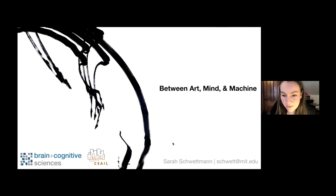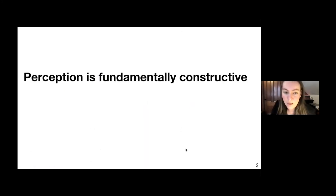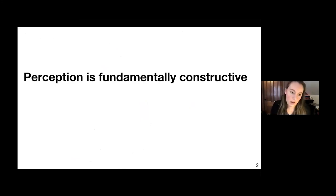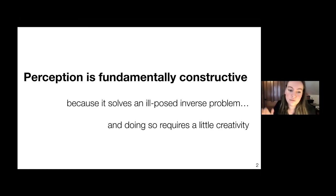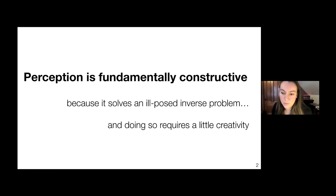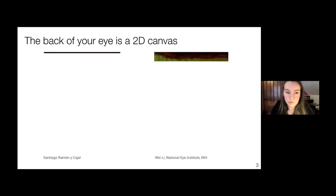I'd like to start with a provocation — you can think of this as a frame for what I'll share today. The statement I'll make is that visual perception itself — human perception, which we attempt to mirror and model in computer vision — is something that's fundamentally constructive. I say that because it solves an ill-posed inverse problem, and doing that solving requires a little bit of creativity.